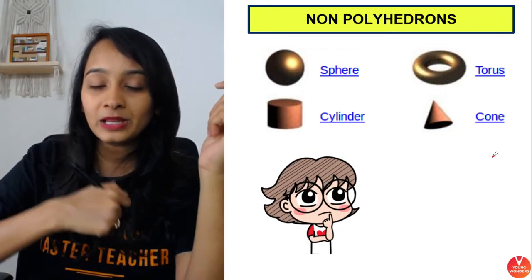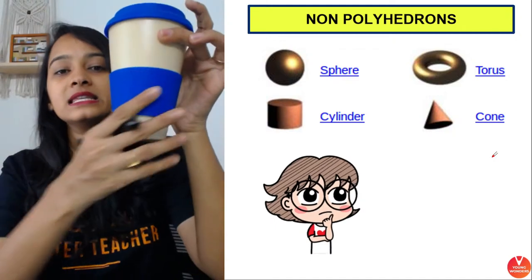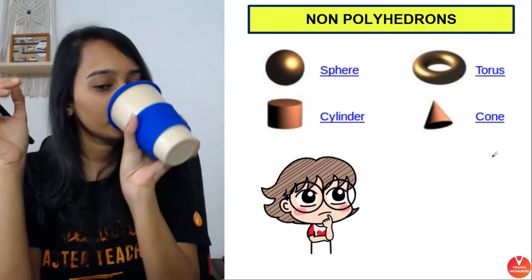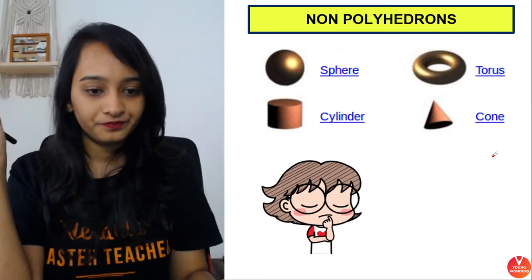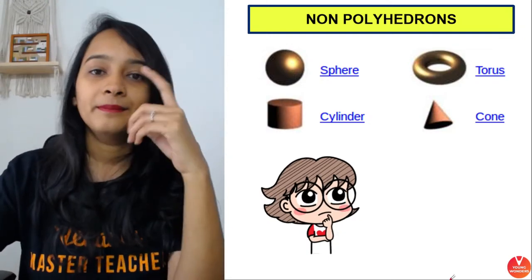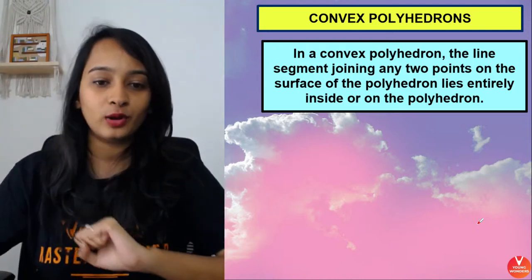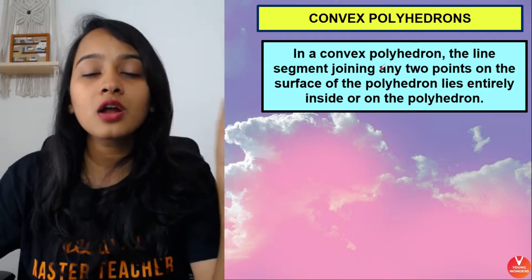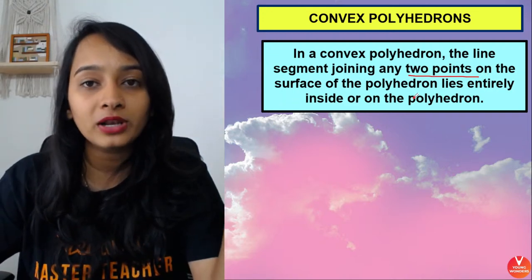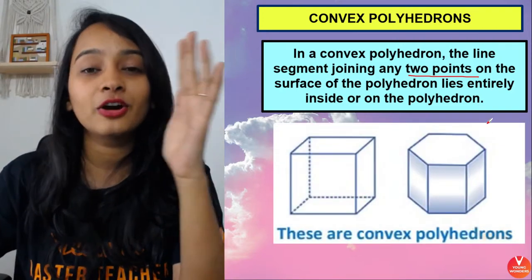Something that is NOT a polyhedron: a sphere, a cylinder, a torus, and a cone — all examples of non-polyhedrons. Now do you think this shape on screen is a polyhedron? It's a 3D shape — but is it a polyhedron? Tell me in the chat box. The answer is no.